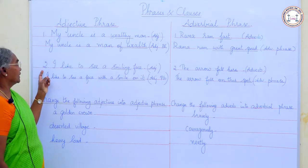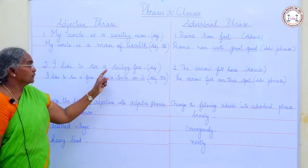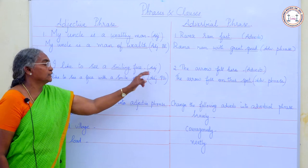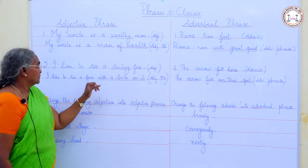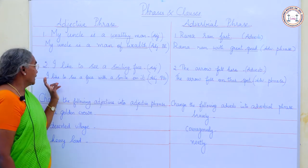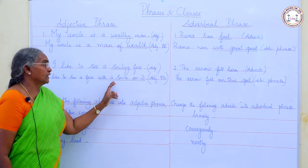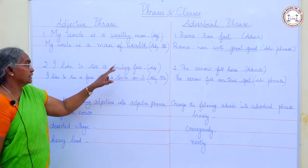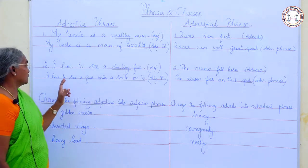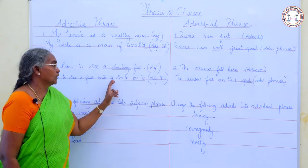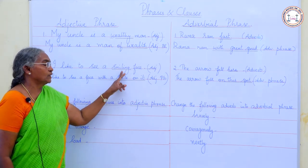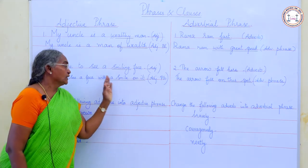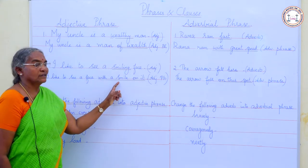Another example: 'I like to see a smiling face.' Here, 'smiling' is the adjective — a single word describing the word 'face.' Now, 'I like to see a face with a smile on it.' Here, 'with a smile on it' is a group of words describing the face. So, this is an adjective phrase. The adjective 'smiling' is replaced by the adjective phrase 'with a smile on it.'